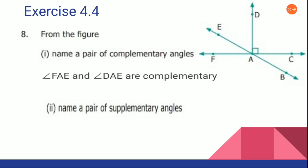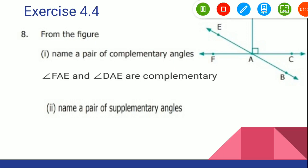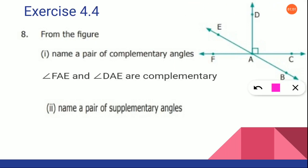So this is how you will write it. Now the second subdivision: name a pair of supplementary angles. What is the supplementary angle? It means it should be 180 degrees. How shall we name it? Shall we take DAF plus DAC and say these two angles are supplementary?